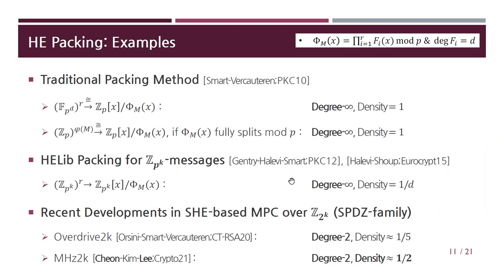A packing method for Z/2^k was first suggested by Gentry, Halevi, and Smart, and later generalized to Z/p^k by Halevi and Shoup — I'll call this the Halevi packing. Their idea was to pack messages only at the constant term of CRT components of the polynomial ring. This leads to a significant loss in packing density. New packing methods were suggested in recent developments in SPDZ-based MPC over Z/2^k. An observation from Overdrive2k was that degree-2 packing is enough for Beaver triple generation, achieving density of roughly 1/5, and MegaHz2k achieved density of roughly one half.